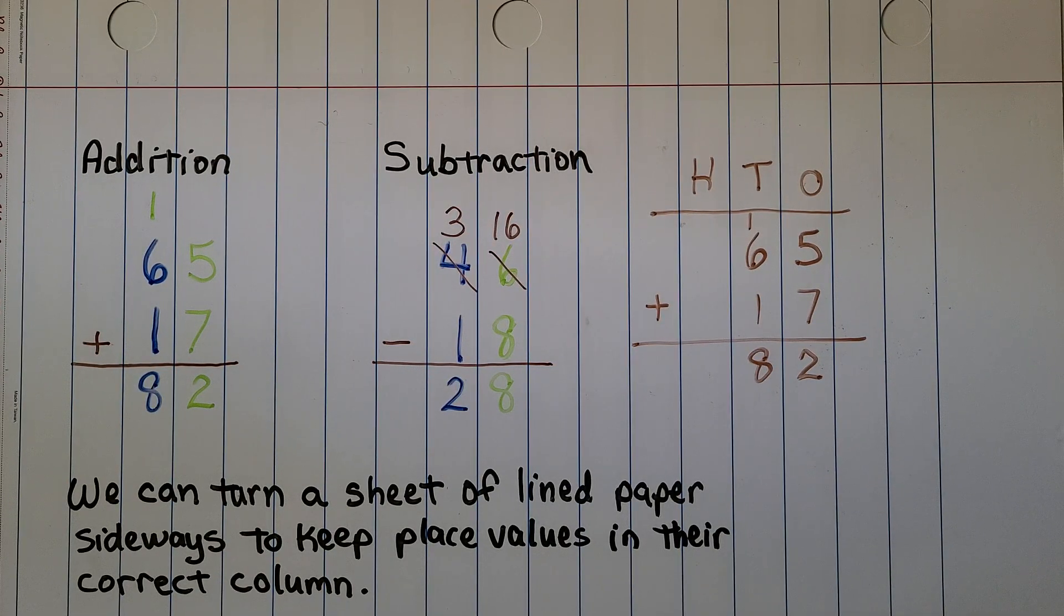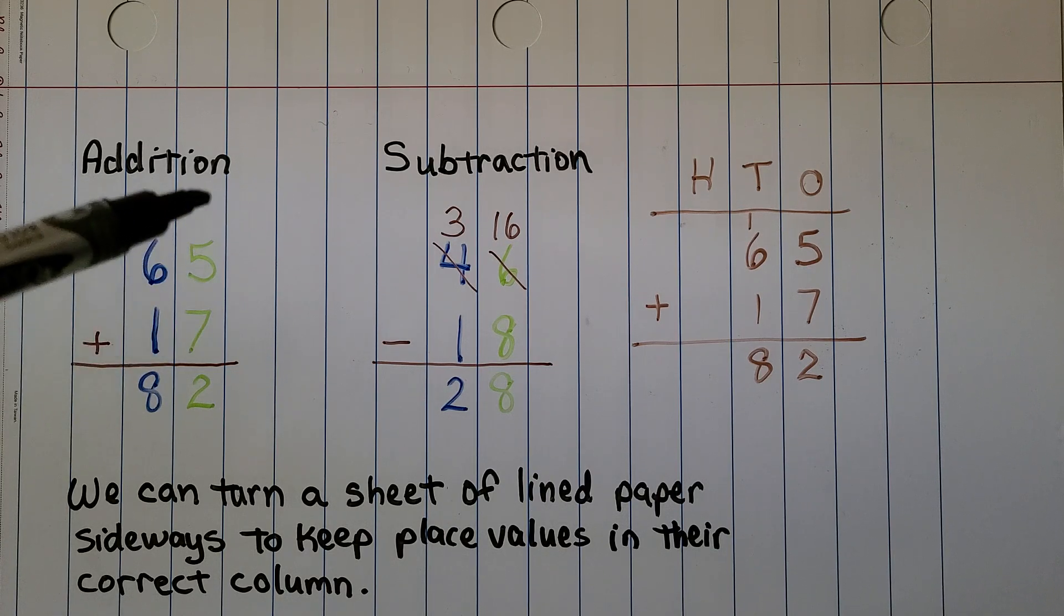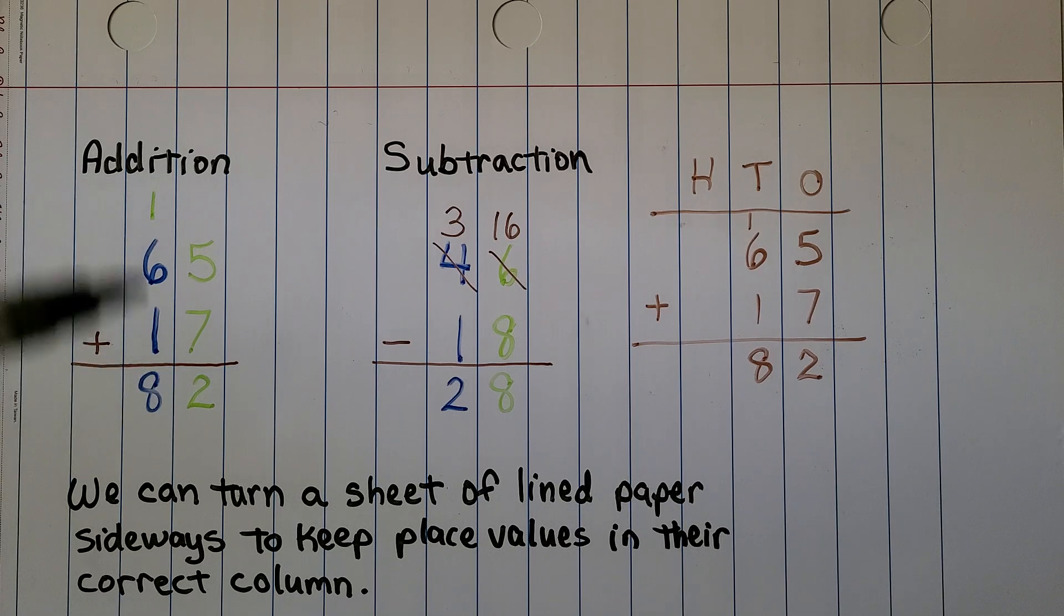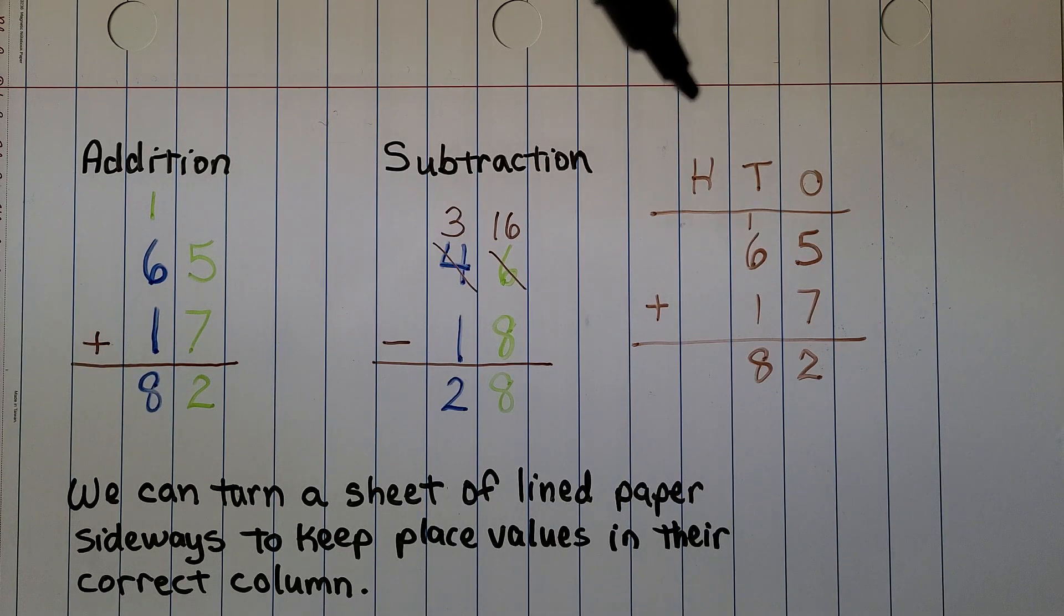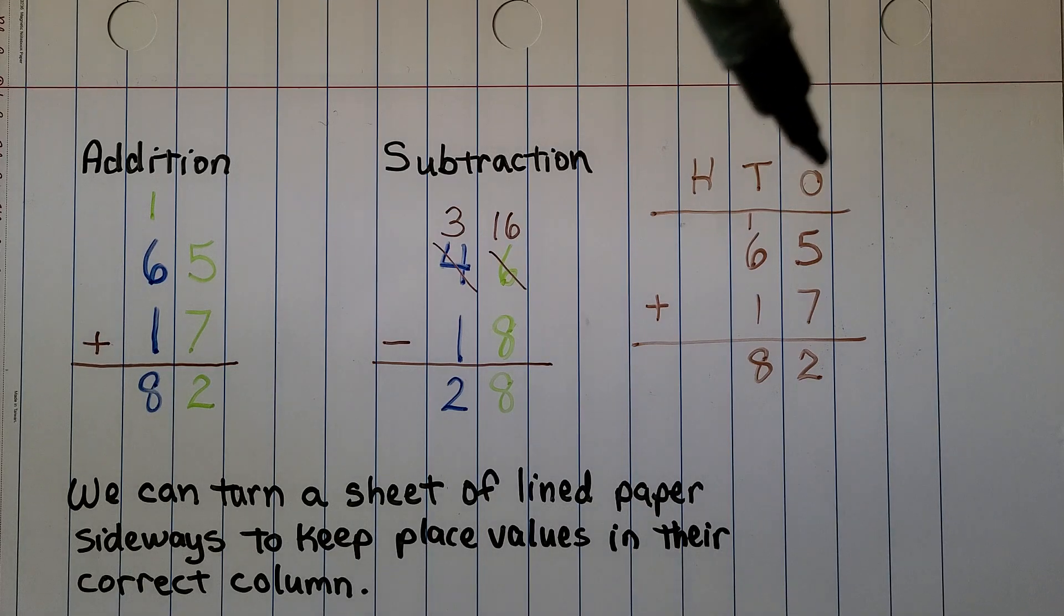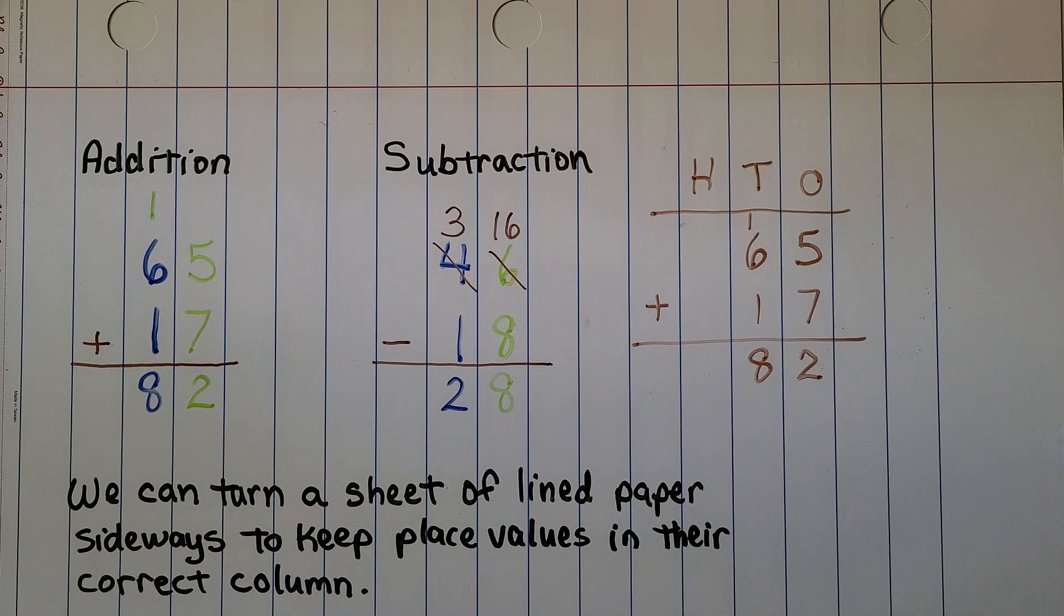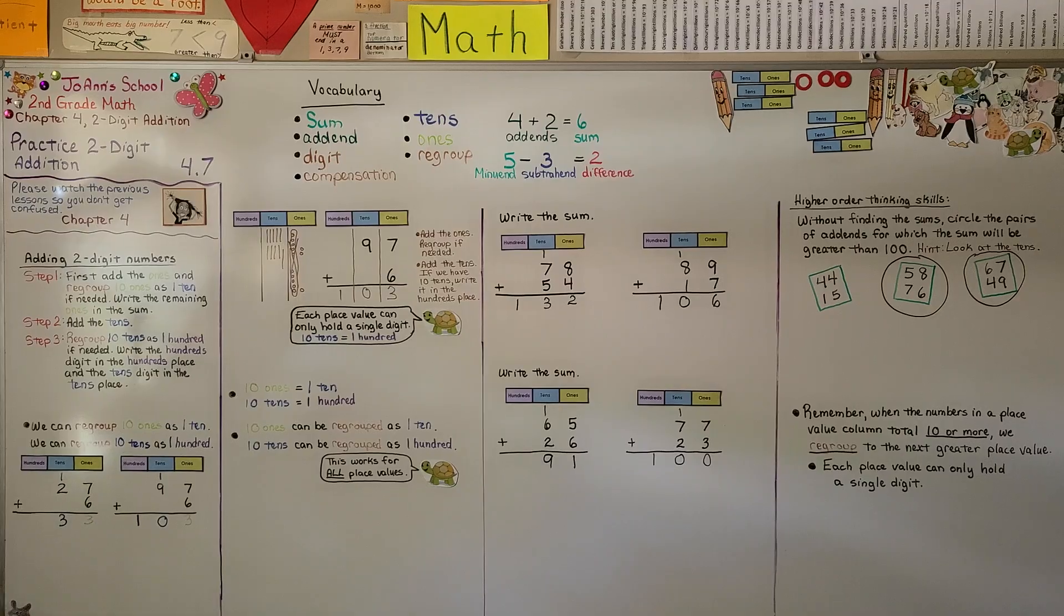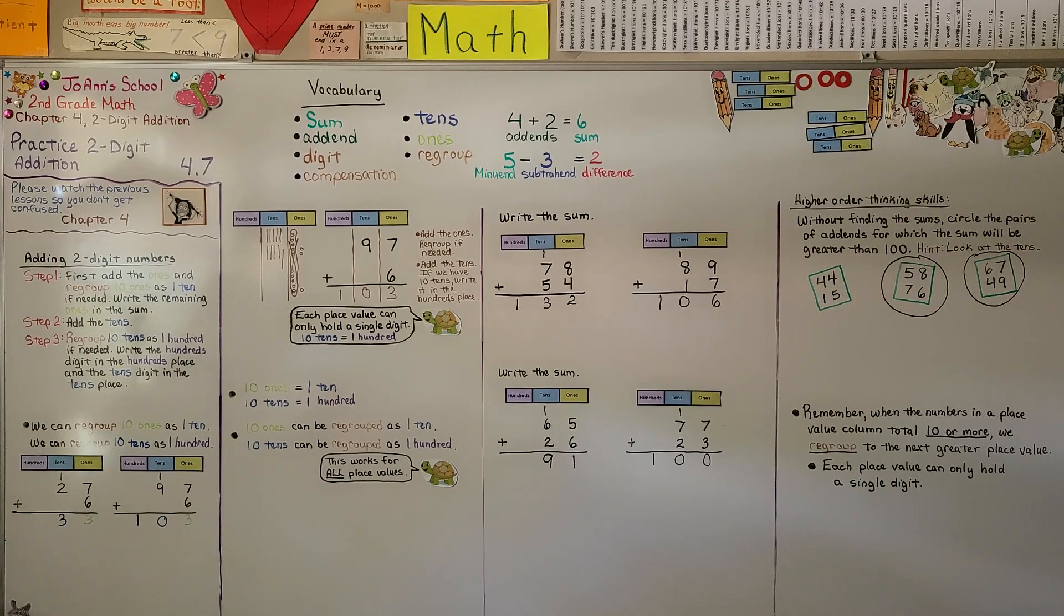As you're doing addition at home or for homework, you can turn a sheet of lined paper sideways to keep place values in their correct column. We can use it for addition, subtraction, and later in the upper grades for multiplication and division. Keep ones in one column, tens in another column. You don't need to write hundreds, tens, ones - you could put H for hundred, T for ten, and O for ones. Keep it nice and neat. Remember, we only regroup when the column in that place value has ten or more.